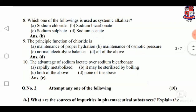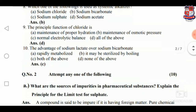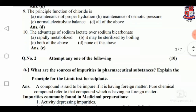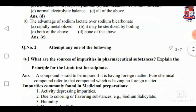Which one of the following is used as a systemic alkalizer? B — sodium bicarbonate. The principal function of chloride is D, all of the above. The advantage of sodium lactate over sodium bicarbonate is C — both of the above.